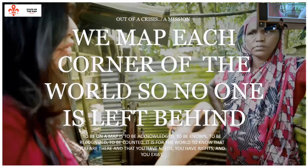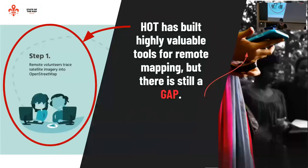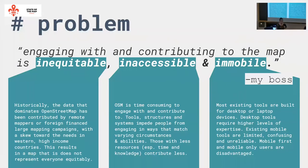I work for HOT. Basic humanitarian mapping: first, you trace it with remote mappers using aerial imagery. Then you get community volunteers to go around and actually put the local data in. Then the humanitarian organizations can actually use that data. HOT has some good tools for remote mapping — we have 180,000 volunteers — but there is a problem: engaging with and contributing to the map is unequitable, inaccessible, and immobile.